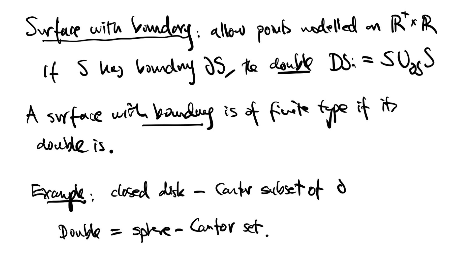An example to consider is a closed disk minus a Cantor subset of its boundary circle. This is homotopic to a point, but we don't consider this to be finite type. The double is a sphere minus a Cantor set which is not homotopic to a finite complex.